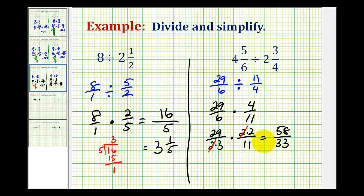And now we have our product as a simplified improper fraction. Let's go ahead and rewrite this as a mixed number. So we'll have 58 divided by 33, well there's 1 thirty-three in 58, our remainder is going to be 25. So 58 thirty-thirds is equal to 1 and 25 thirty-thirds.